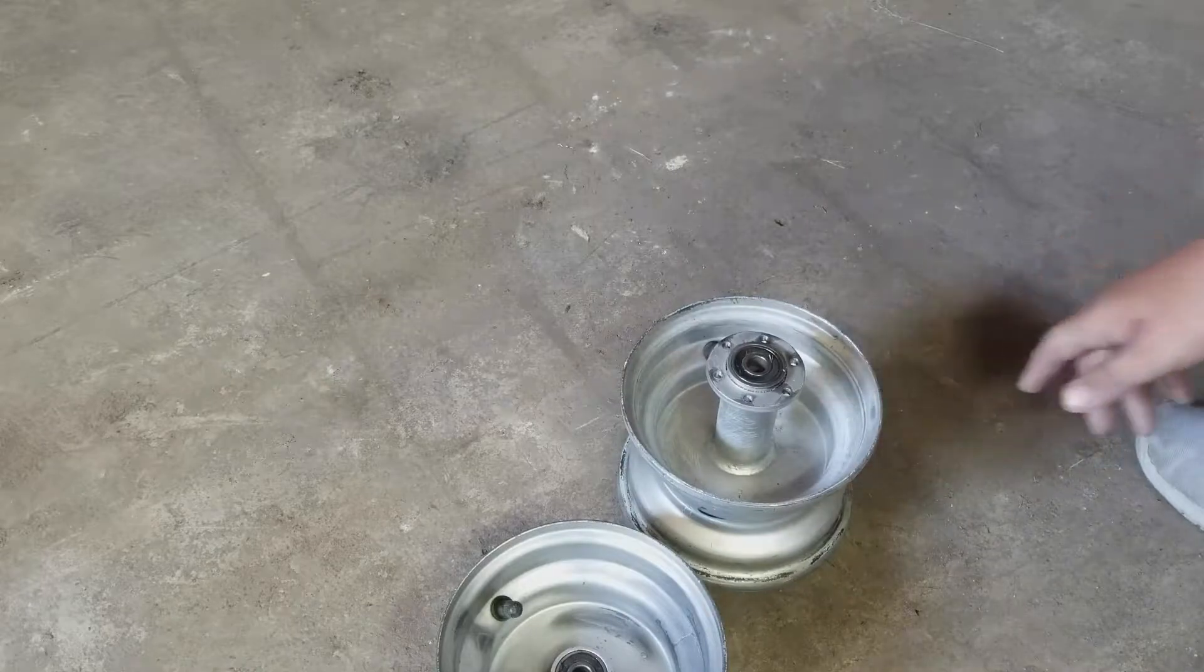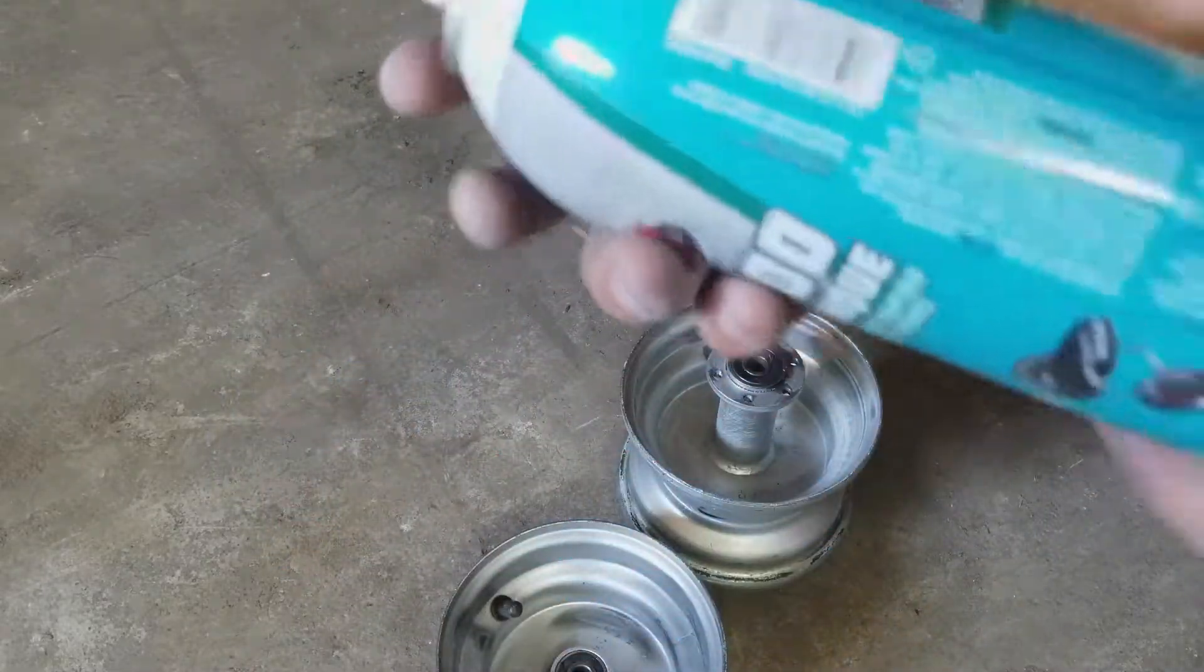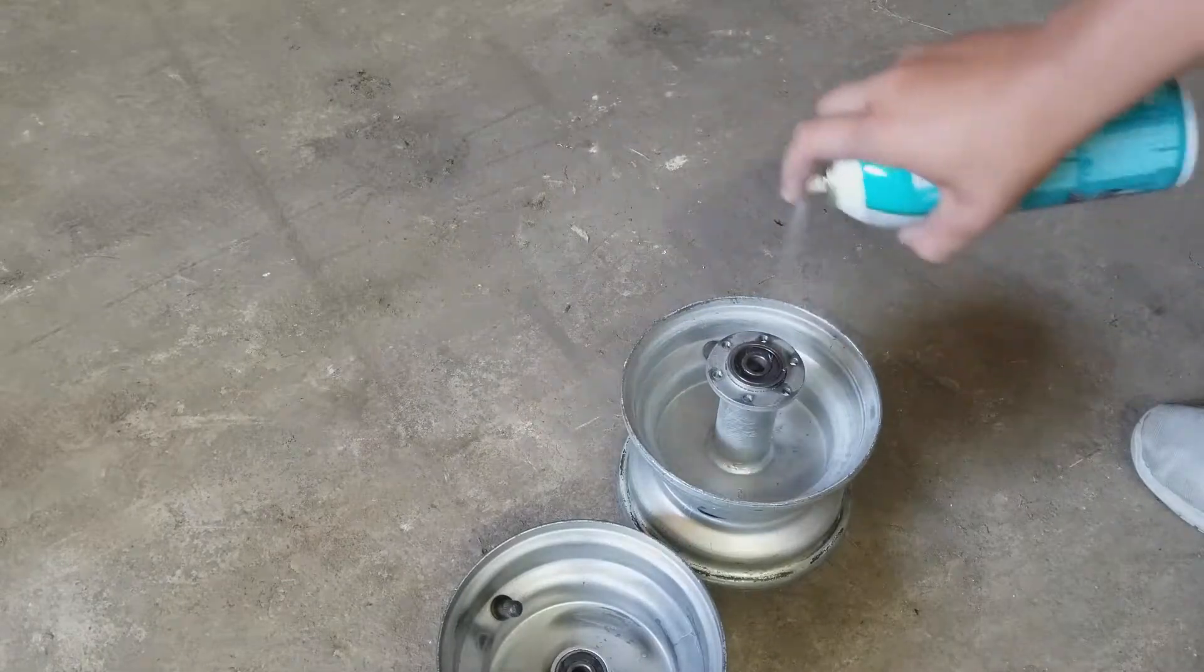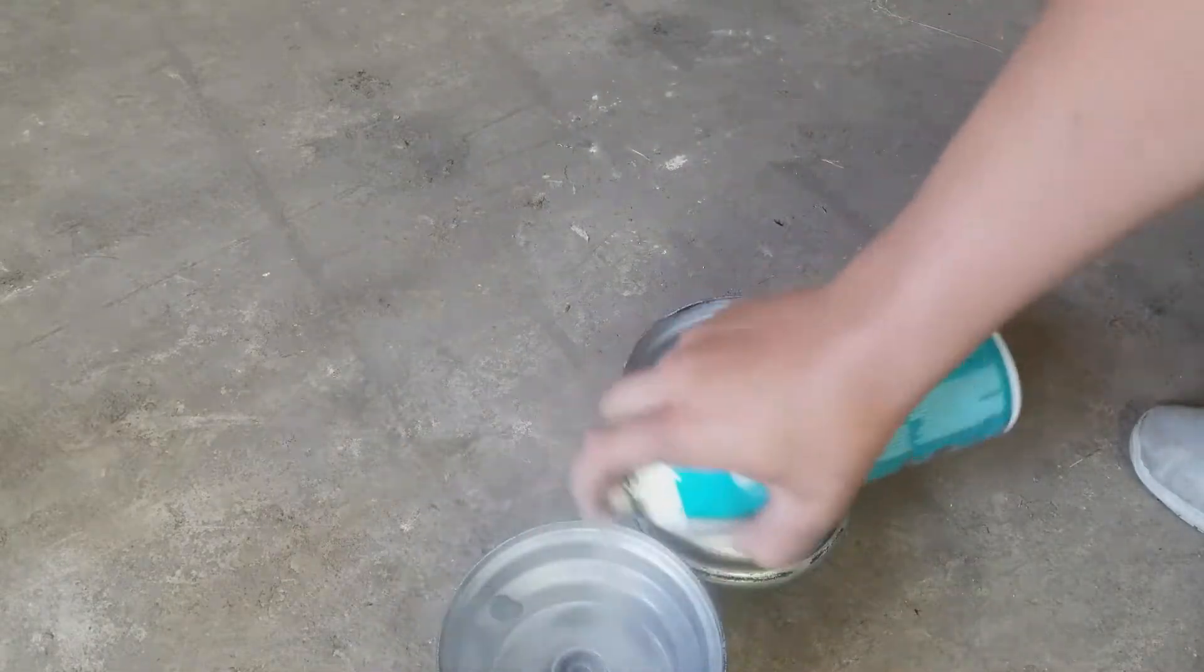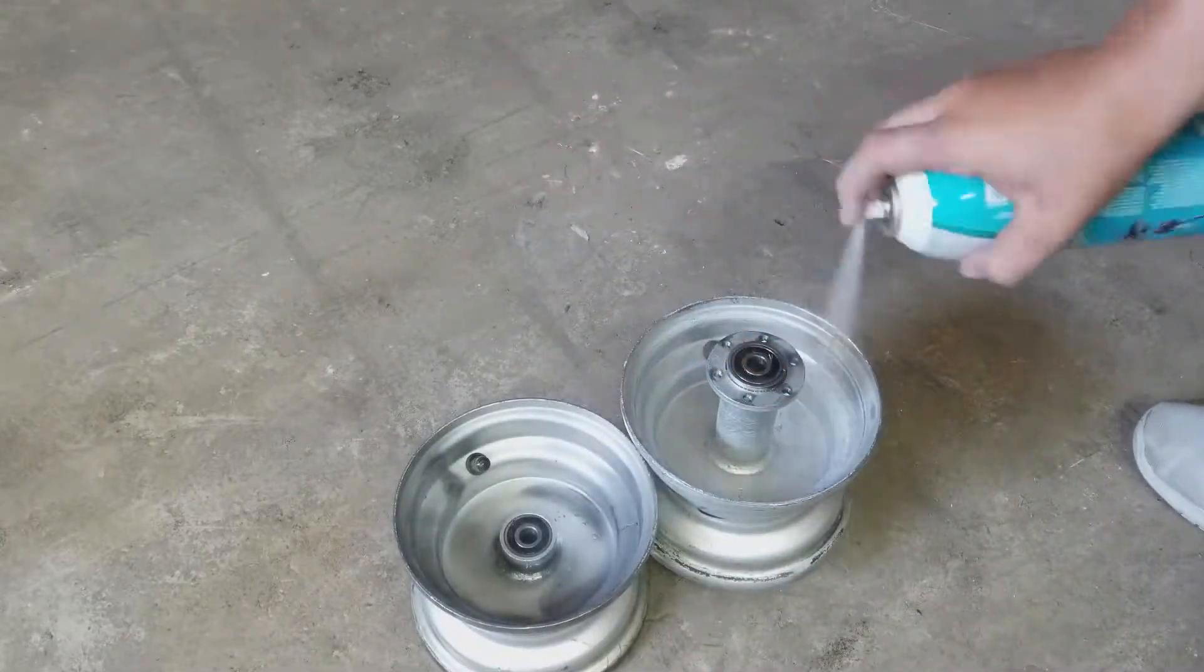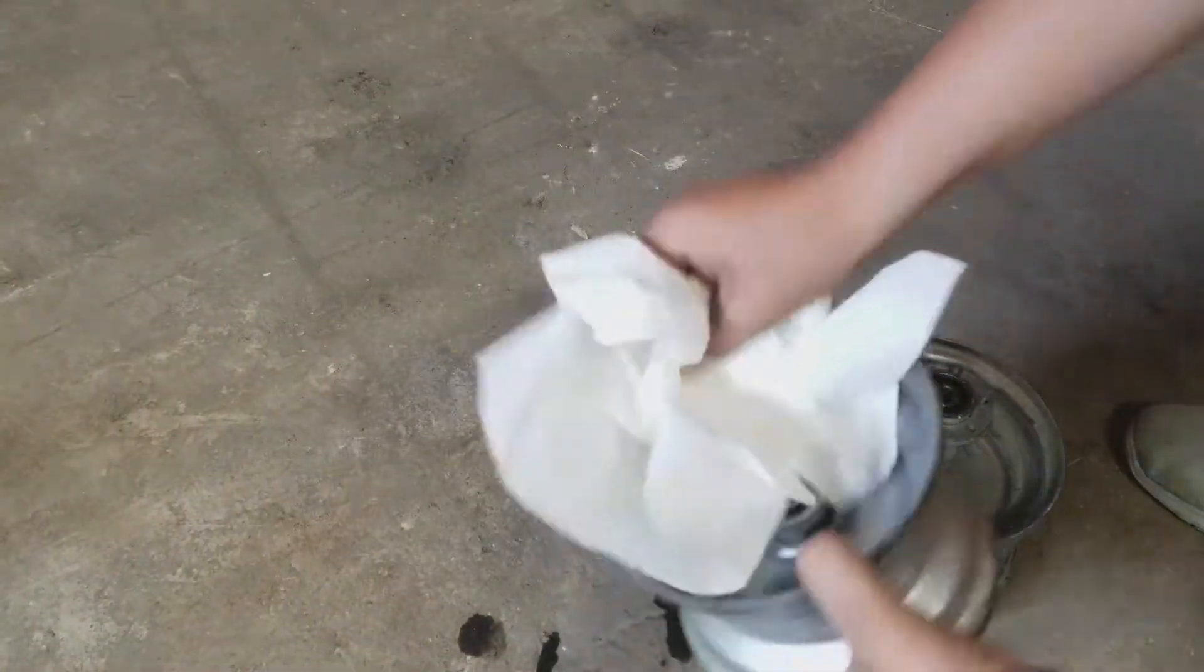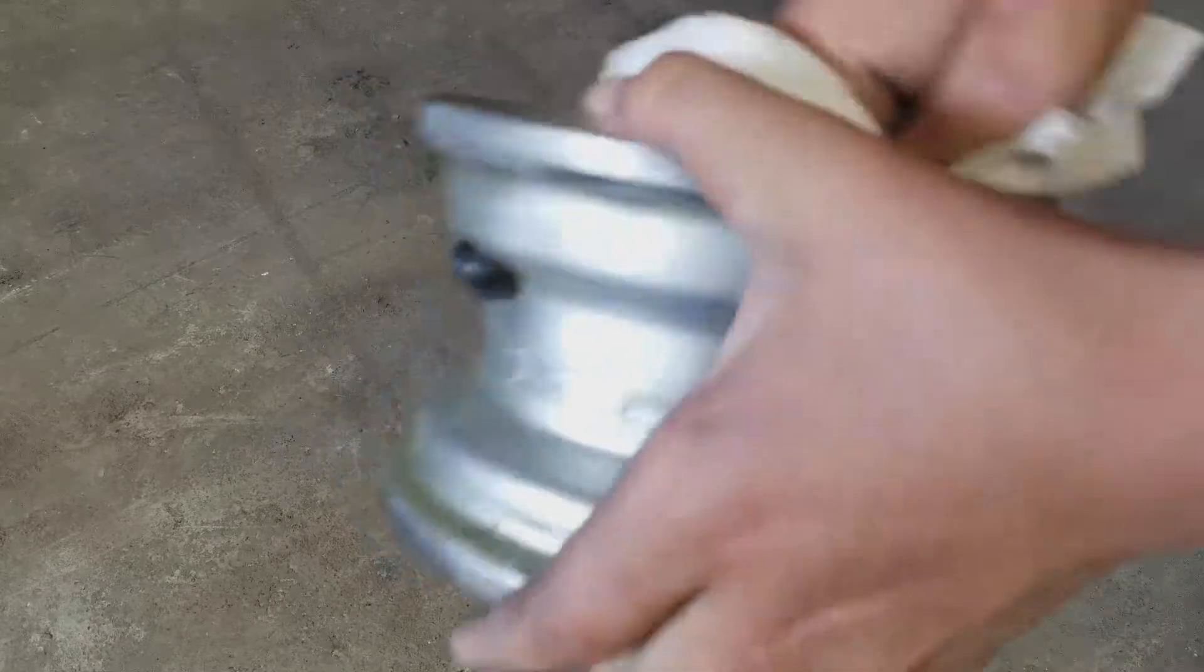Now what you want to do is get starting fluid or carburetor cleaner and then just spray it in there. Now what you want to do is get some napkins and just wipe it all out. There you go.